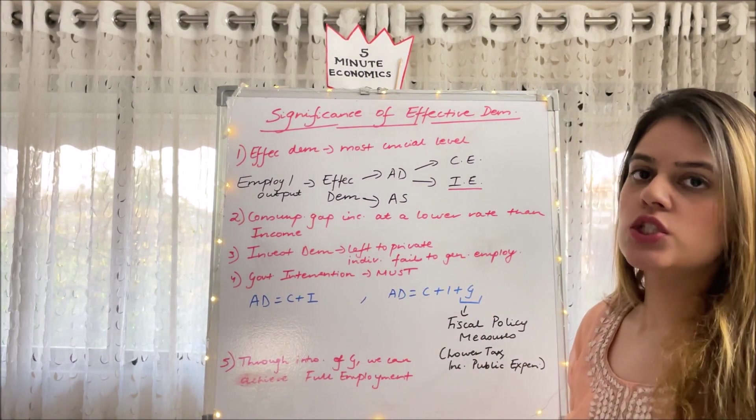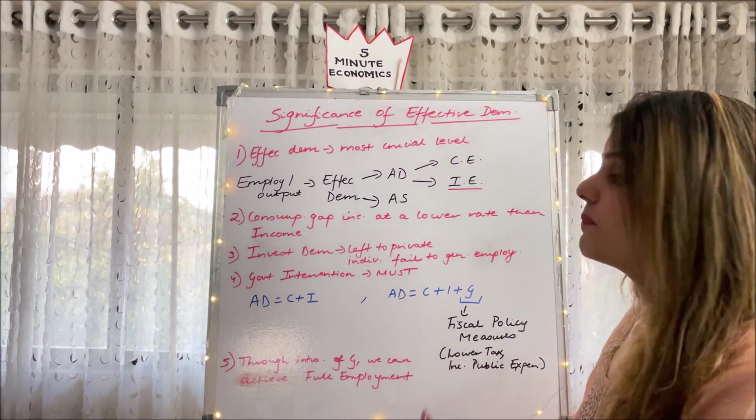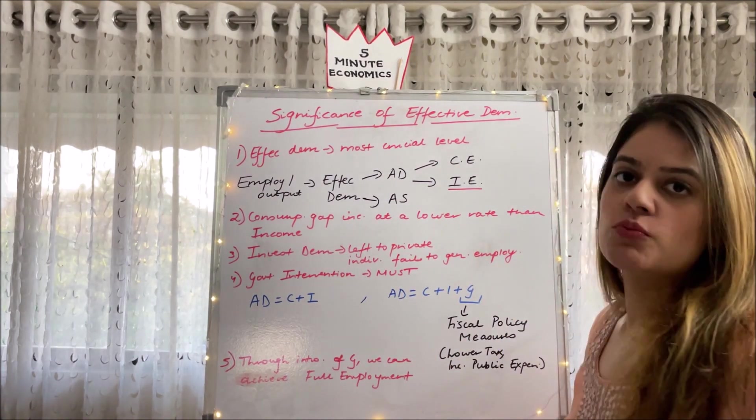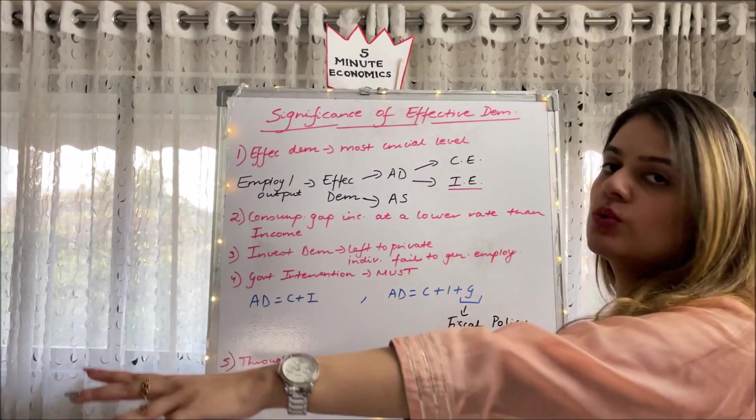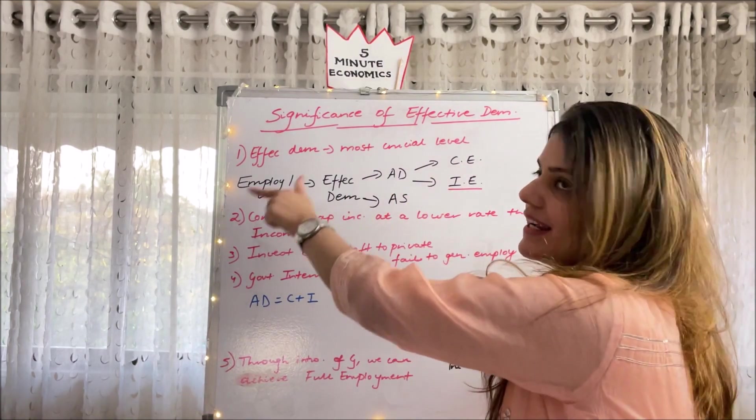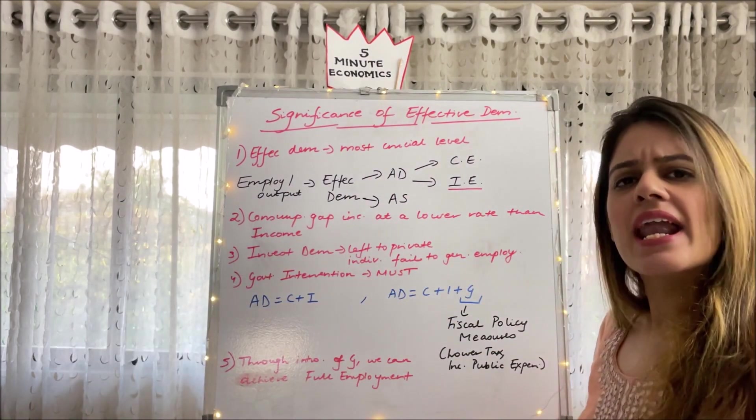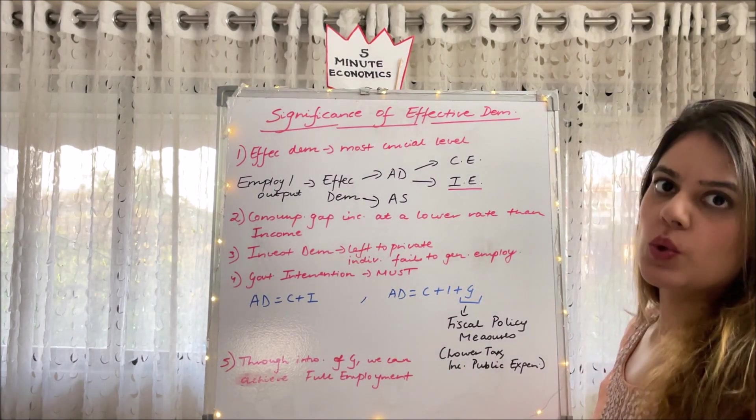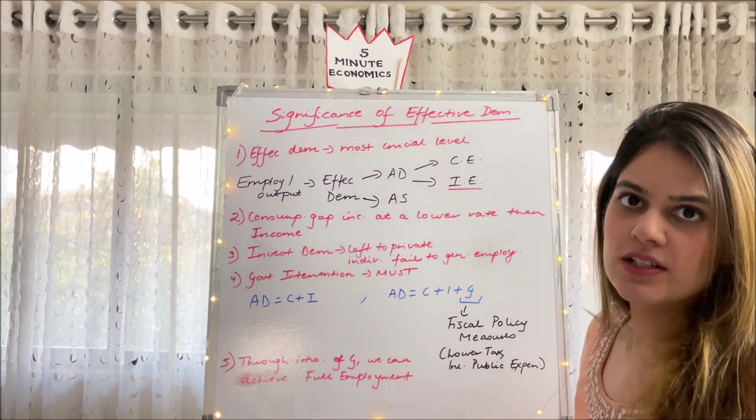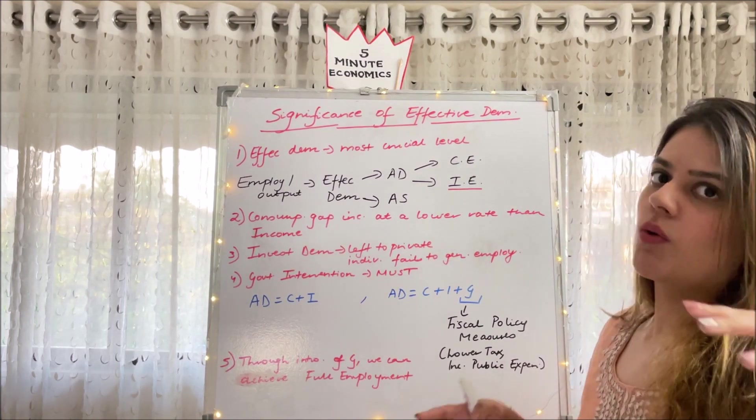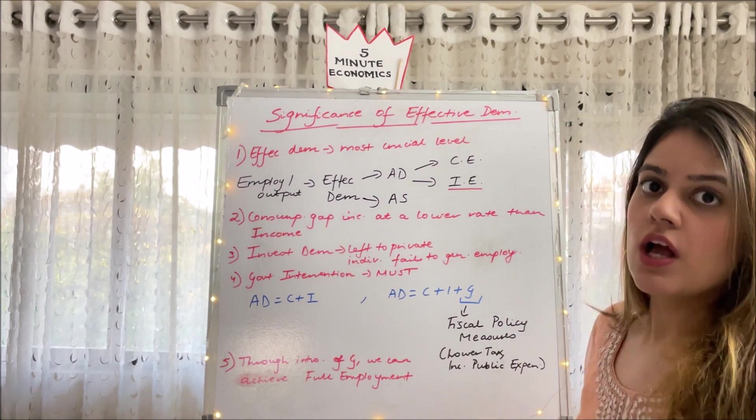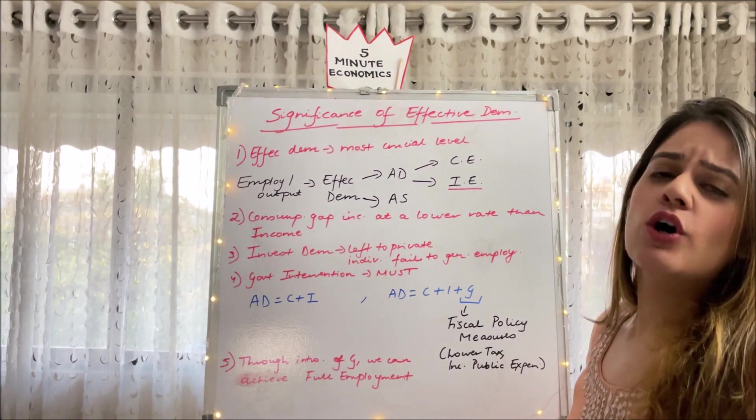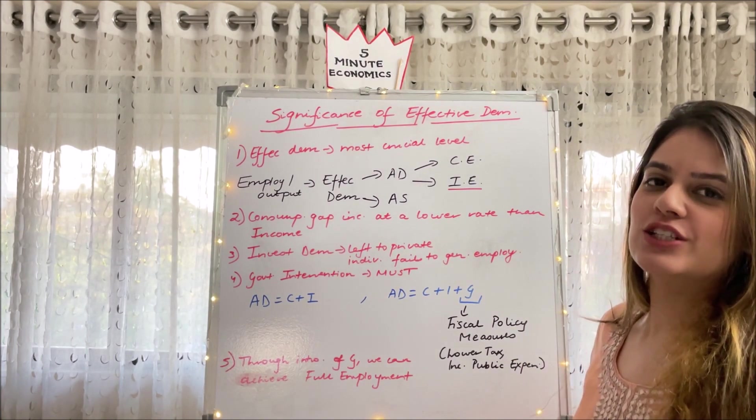That is why he said government intervention is a must. Initially our AD was made up of C plus I, but later on, when Keynes stepped in, Keynes showed us that AD should be comprising of C plus I plus G, which is the government expenditure. If government increases its expenditure, this would lead to an increase in employment and output. How can government increase its expenditure? It can increase its expenditure through fiscal policy measures. Fiscal policy was created or established by Keynes.